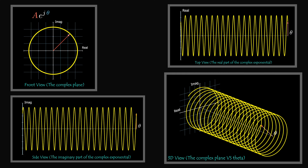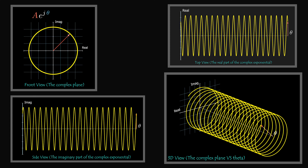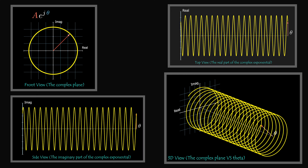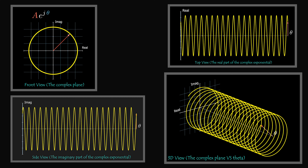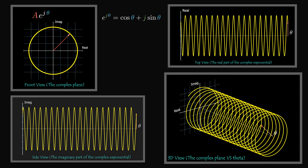This is the continuous time complex exponential. Here we have the continuous time complex exponential as well as its front, top, and side views. The top view shows the real part of the complex exponential while the side view shows the imaginary part. The real part is the cosine function from Euler's formula, while the imaginary part is sine.